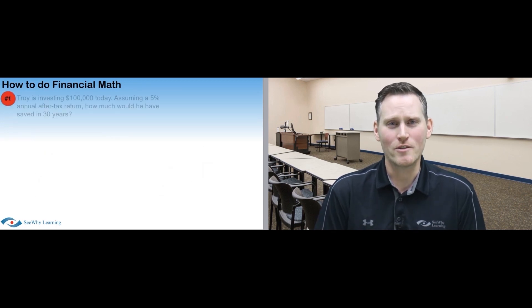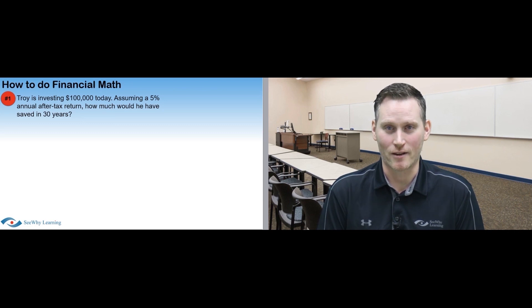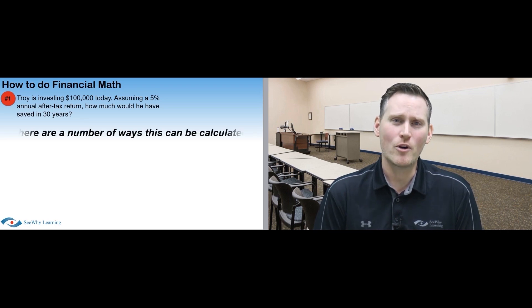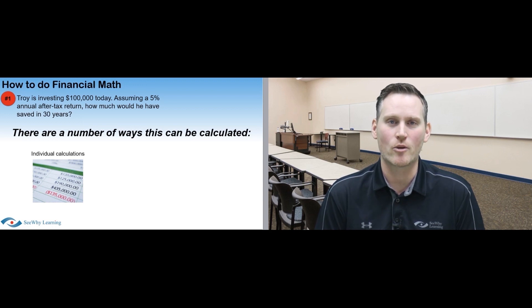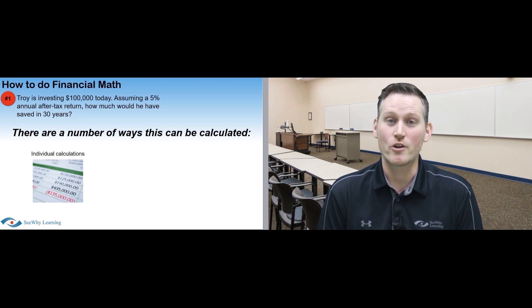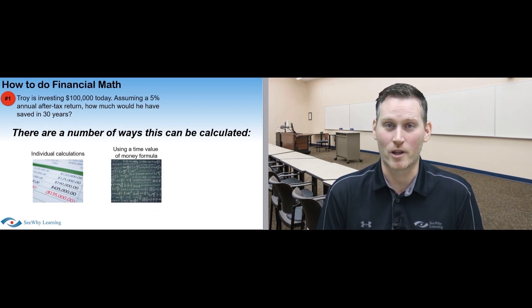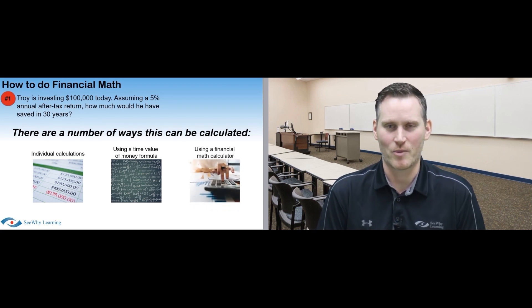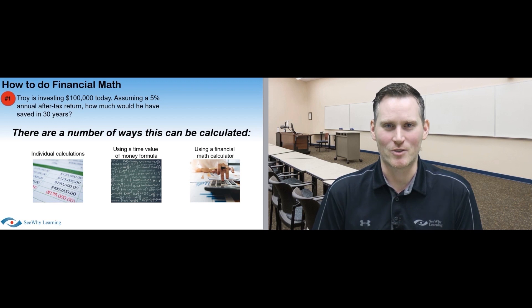Question number one. Troy is investing $100,000 today. Assuming a 5% annual after-tax return, how much would he have saved in 30 years? There are a number of ways that this can be calculated. You could do a calculation for every single year, either manually or by using a spreadsheet. You could use an algebraic time value of money formula. Or you could use a financial math calculator like the Hewlett-Packard 10b. Let's take a look at each of these methods.